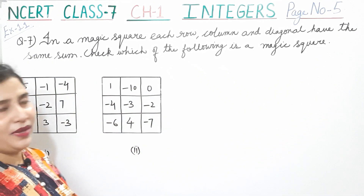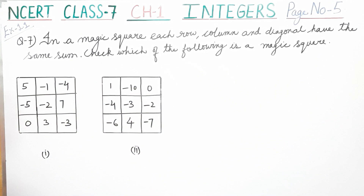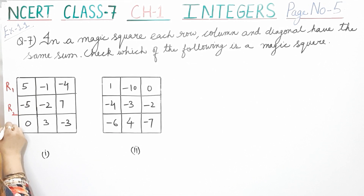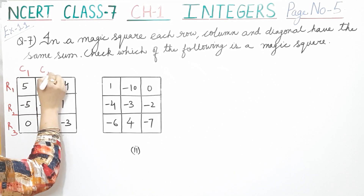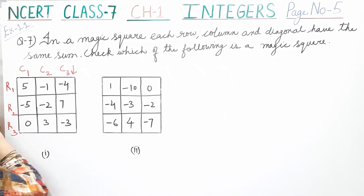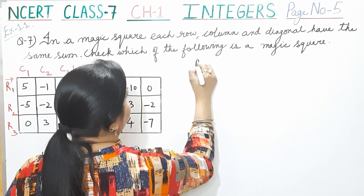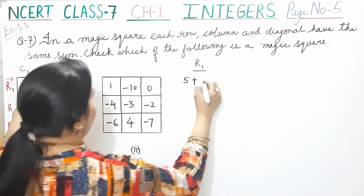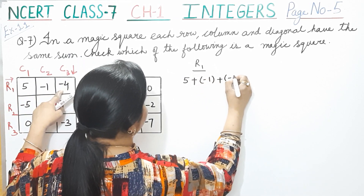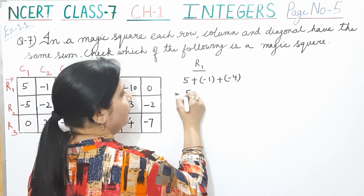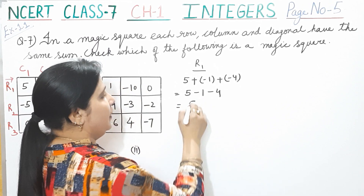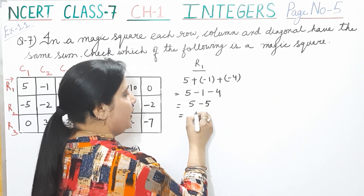Let's check the first square. This is row 1, row 2, and row 3. Column 1, column 2, and column 3. Columns go this way and rows go this way. Let's take row 1 first. Row 1 has 5, -1, and -4. So 5 + (-1) + (-4) = 5 - 1 - 4 = 0.